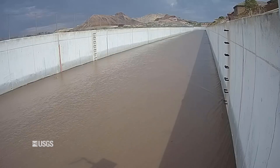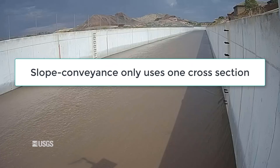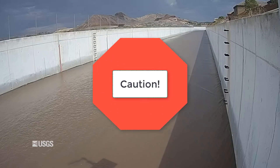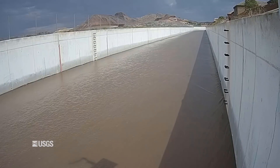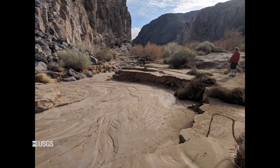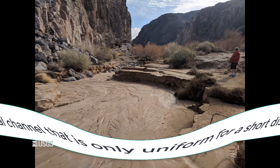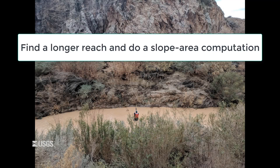A slope conveyance only uses one cross section, and unless that cross section is representative of the entire reach, the estimate of flow that it provides could have considerable error. A place where you might consider using a slope conveyance computation would be a uniform concrete channel, or a natural channel that is only uniform for a very short distance. If at all possible, though, try to find a longer reach so you can do a slope area computation instead.